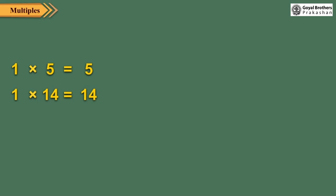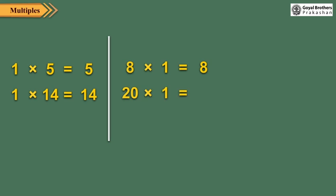So, every number is a multiple of itself. For example, 8 is a multiple of 8 because 8 multiplied by 1 is equal to 8, and 20 is a multiple of 20 because 20 multiplied by 1 is equal to 20.